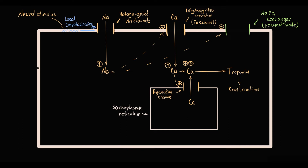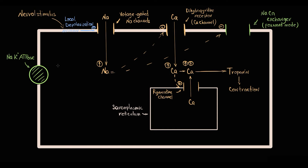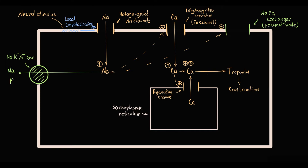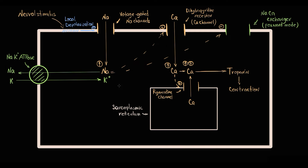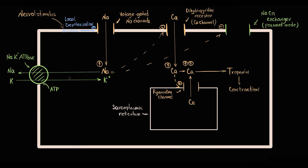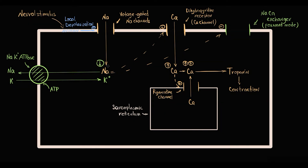Intracellular sodium level is regulated by sodium-potassium ATPase, located on the cellular membrane, which transports sodium out of the cell and potassium into the cell. Because sodium is an extracellular ion and potassium is an intracellular ion, this transport occurs against concentration gradients and requires energy in the form of ATP. Sodium-potassium ATPase uses cellular energy reserves and pumps out sodium in exchange for potassium.